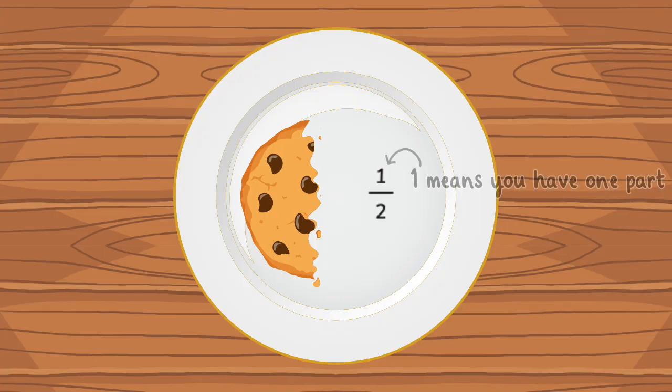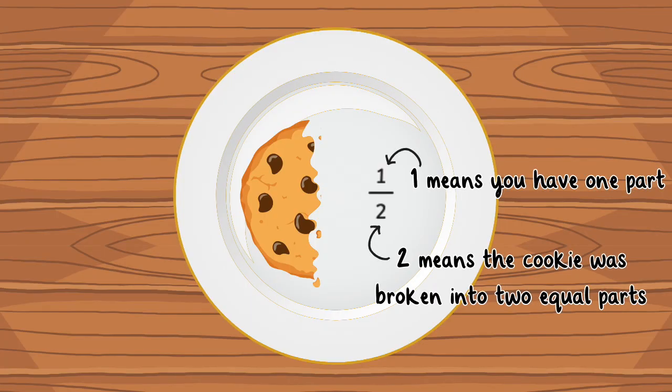So in one half, the one means you have one part and the two means the cookie was broken into two equal parts.